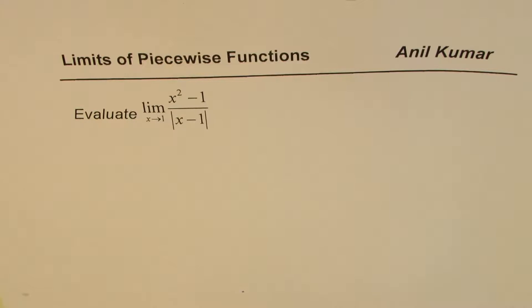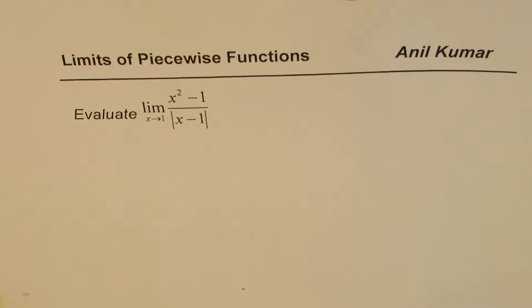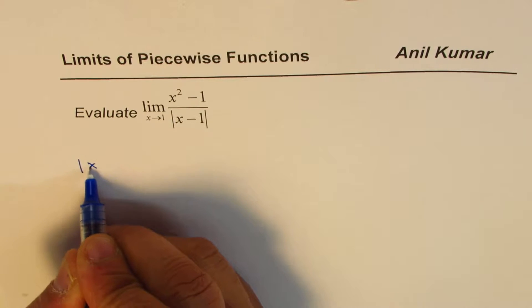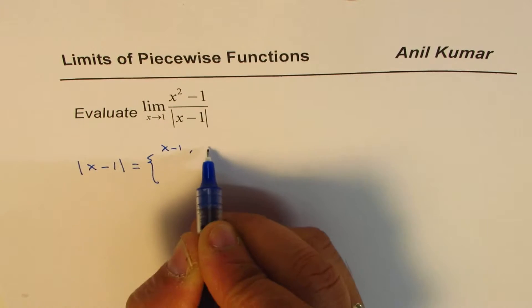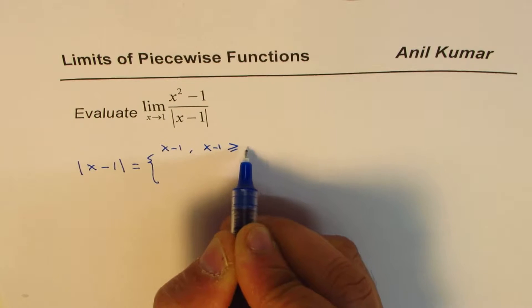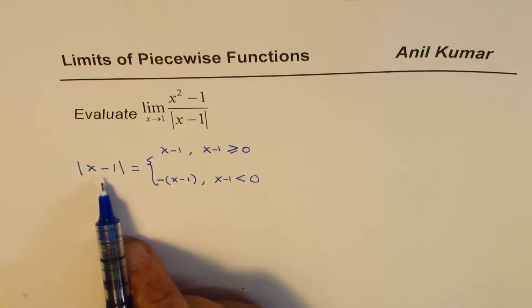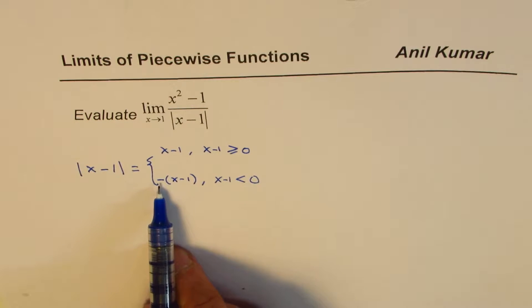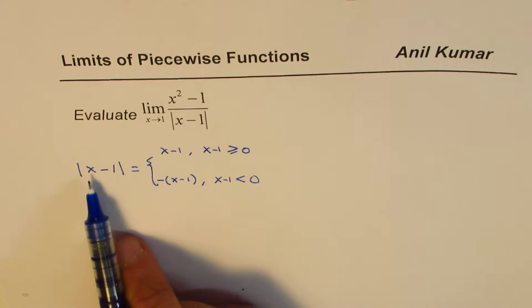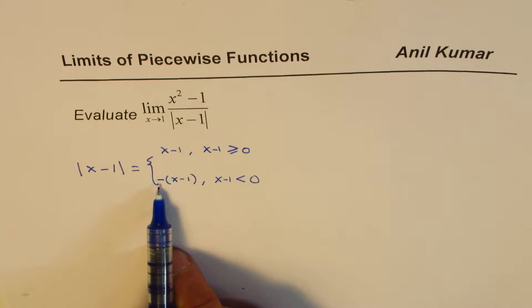It does not really look like a piecewise function, but as you know, whenever an absolute function is involved, we are always working with a piecewise function. The absolute value of x minus 1 equals x minus 1 if x minus 1 is greater than or equal to 0, and equals negative of x minus 1 if x minus 1 is less than 0. Absolute value is always positive, so if you get a negative value of the inside term, you make the negative of that to make it positive. For example, if x is minus 2, then minus 2 minus 1 is minus 3, and the absolute value of minus 3 is 3 — because we take the negative of minus 3.